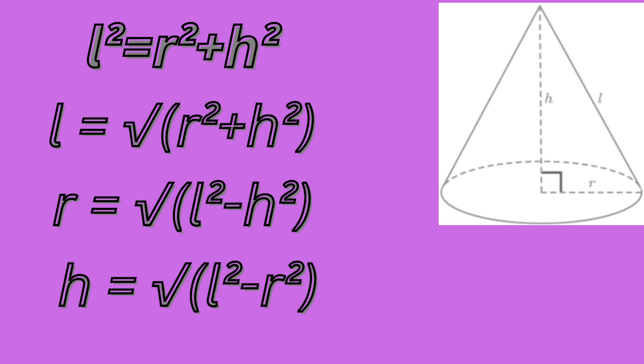It is obvious from this diagram if the slant height, radius and height are taken to be L, R and H respectively, then L square equals to R square plus H square.